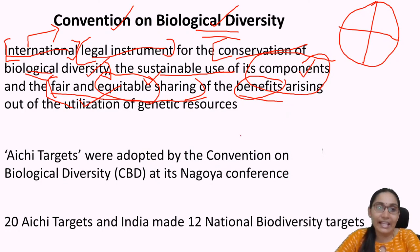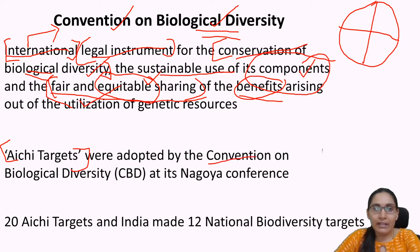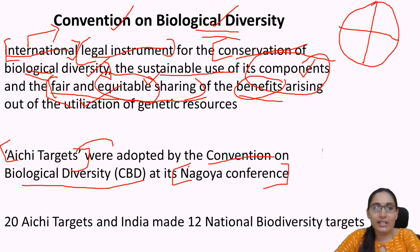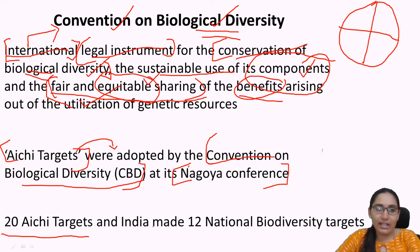The Aichi Targets — there are basically 20 Aichi Targets — were adopted by the Convention on Biological Diversity at the Nagoya Conference. India made 12 national biodiversity targets in response.